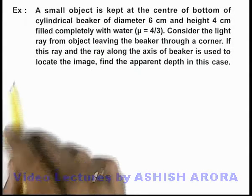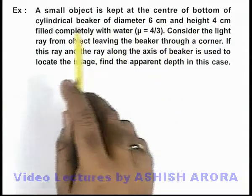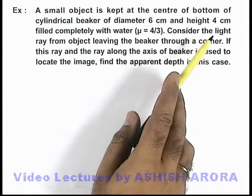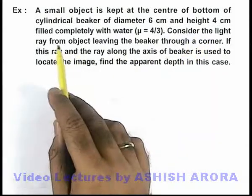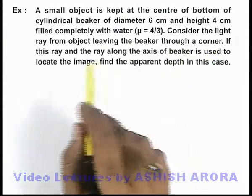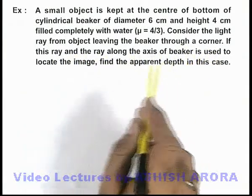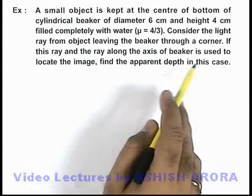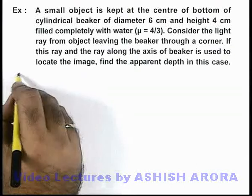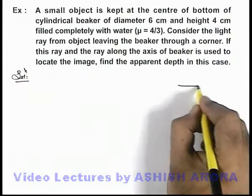In this example, we are given that a small object is kept at the center of the bottom of a cylindrical beaker of diameter 6 centimeter and height 4 centimeter, which is filled completely with water. We are required to consider a light ray from the object leaving the beaker through a corner, and if this ray and the ray along the axis of the beaker are used to locate the image, we are required to find the apparent depth in this situation.